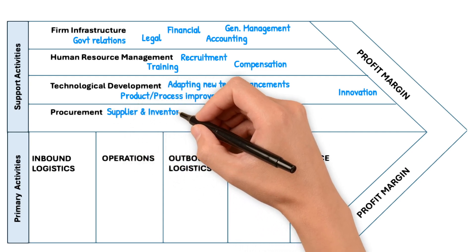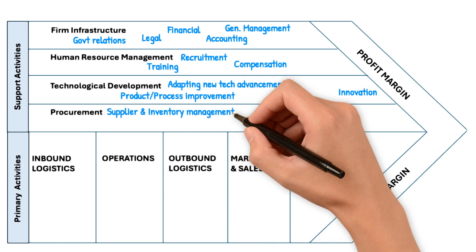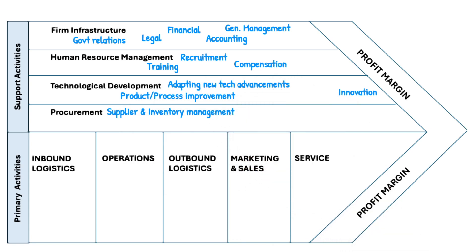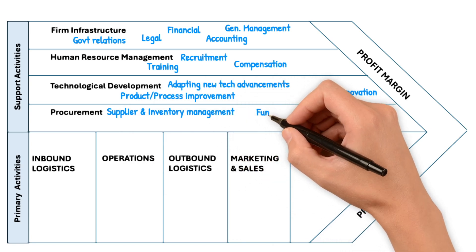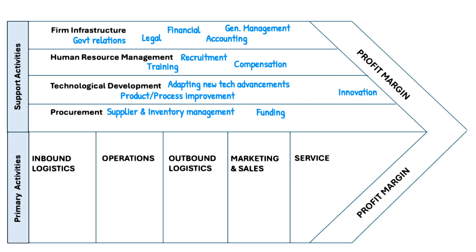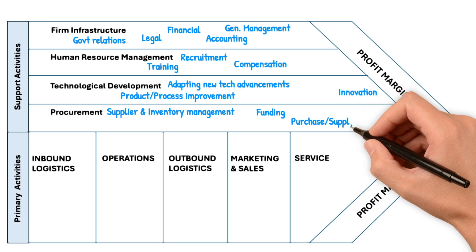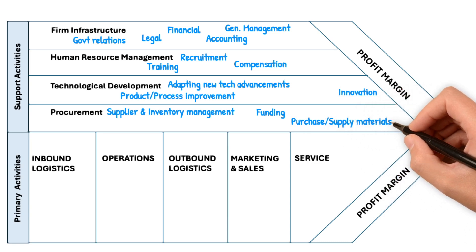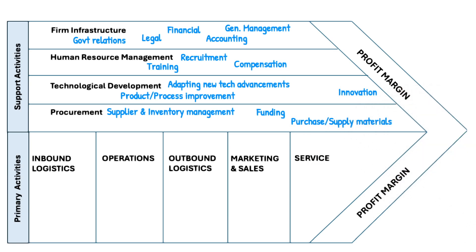The fourth support activity is procurement. To build any business, you primarily need vendor management, vendor suppliers, inventory management, and to know where your funding is coming from. How are you purchasing and how are you supplying to the market? It's about what goes in and out of a business.